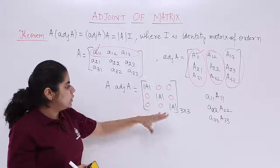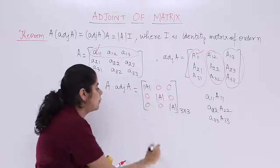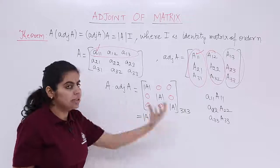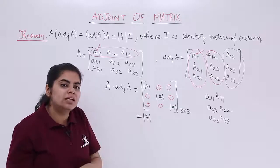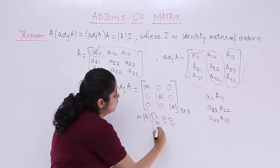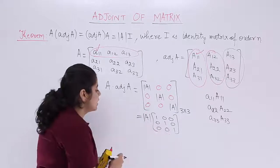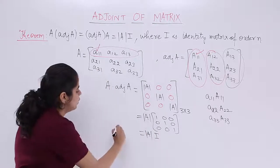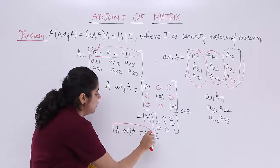So A into adjoint A has det(A) on the diagonal and 0 everywhere else. If we take det(A) as a scalar common factor from this matrix — and remember, for scalar multiplication of a matrix we take it out only once, not three times — we are left inside with the matrix [1,0,0; 0,1,0; 0,0,1], which is the identity matrix. Therefore, A multiplied by adjoint A equals determinant of A into I.